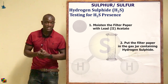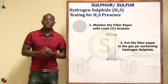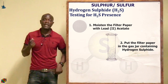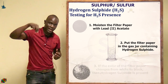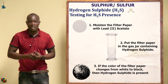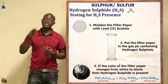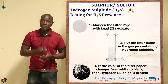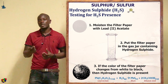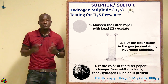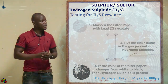To test for the presence of hydrogen sulfide, moisten a filter paper with lead acetate (lead ethanoate), then expose the filter paper in a gas jar full of hydrogen sulfide. If the filter paper turns black, this confirms the presence of hydrogen sulfide — the black color is due to the formation of lead(II) sulfide, which is black. The byproduct is ethanoic acid.